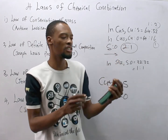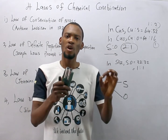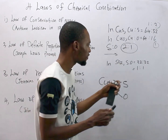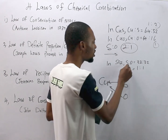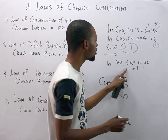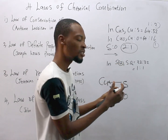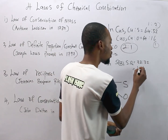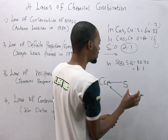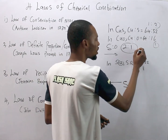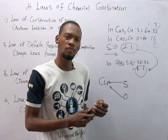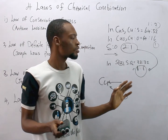Now looking at sulfur and oxygen combining with themselves in SO2: the mass of sulfur is 32 grams and two molecules of oxygen gives 16 times 2, which is 32 grams. So the ratio of sulfur to oxygen in SO2 is 1:1. The ratio at which they combine with copper was 2:1, while the ratio at which they combine with each other is 1:1 — these are simple multiples of each other. That is what the law of reciprocal proportions is about.